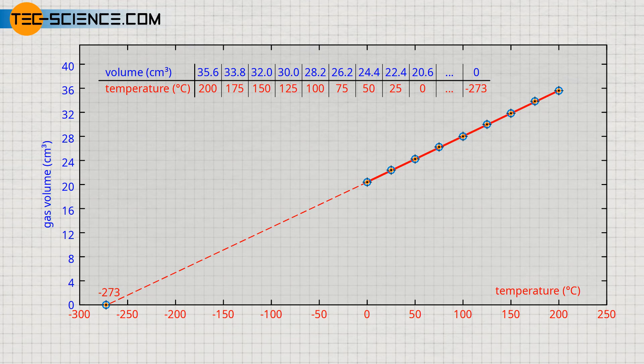Consequently, the point of intersection with the temperature axis corresponds to absolute zero, which is at minus 273.15 degrees Celsius on the Celsius scale, and minus 459.67 degrees Fahrenheit on the Fahrenheit scale.